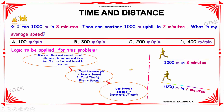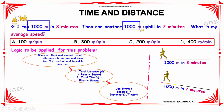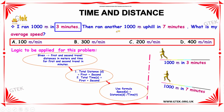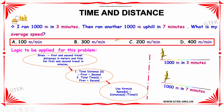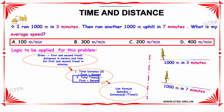The logic to be applied for this problem is: first of all, we need to identify the given data. The given values are the first and second travel distances in meters, and the first and second travel times in minutes. Secondly, we have to identify the total distance and total time using the formulas: total distance equals the first travel distance plus the second travel distance, and total time equals the first travel time plus the second travel time.